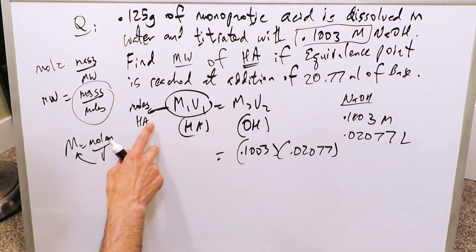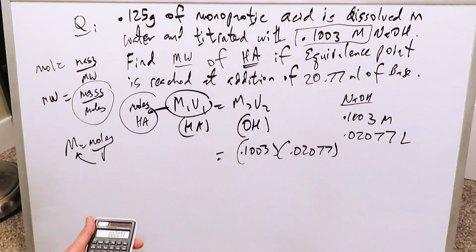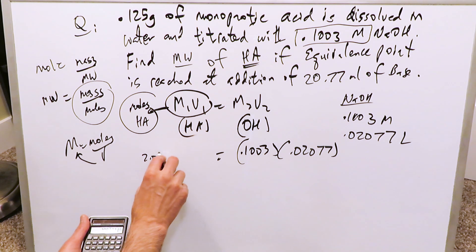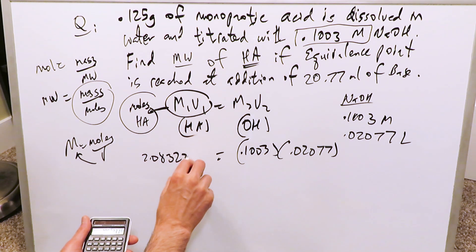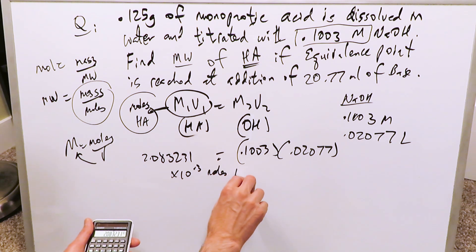My M2V2 for your base is actually equal to your moles of acid, and that exactly is this. It will be 0.1003 times 0.02077, which is liters. I have over here 2.083231 times 10 to the minus 3 moles of acid, HA.